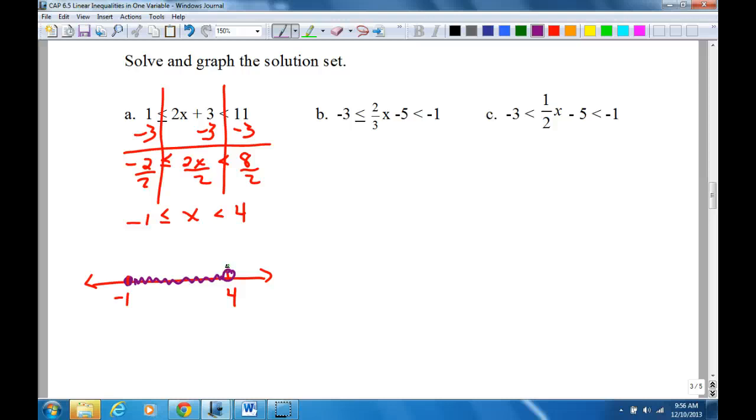For B, what's the first thing I'm going to do? Plus 5. Add 5. If I do it here, I've got to do it here, and I've got to do it here. So this will be 2 less than or equal to 2 thirds x less than 4. How do I get rid of that fraction? Multiply everything by 3. So this will be 6 less than or equal to 2x less than 12.